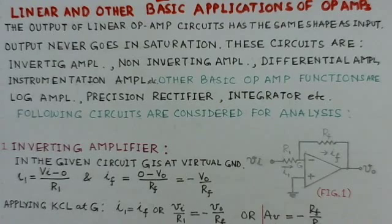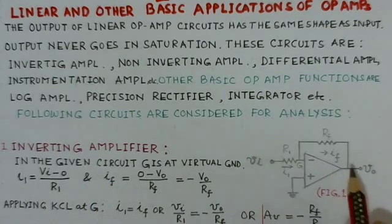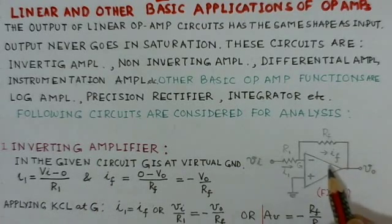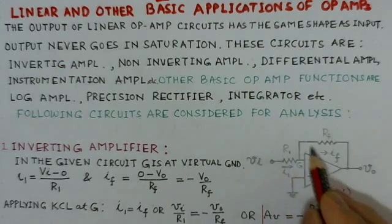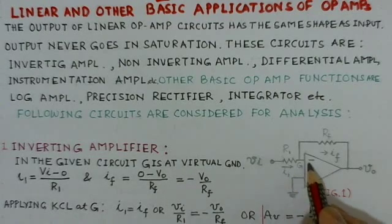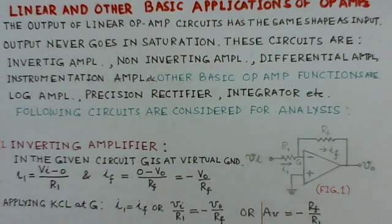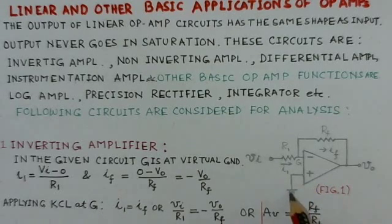The first circuit considered here is the inverting amplifier. This circuit consists of an input resistance R1 and the feedback resistance RF. The input is applied at the inverting terminal — that is why it is called an inverting amplifier. The non-inverting input is grounded.